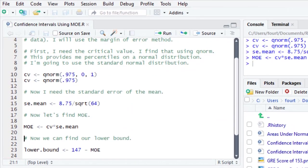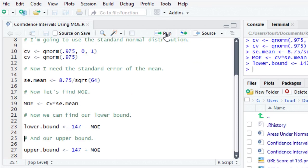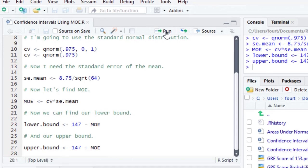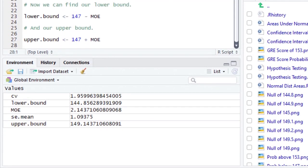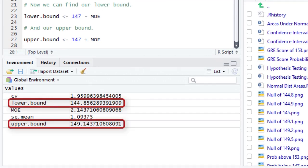Now we can find our lower bound. We take the sample mean of 147 and subtract MOE. And our upper bound, we take the sample mean of 147 and add MOE. The lower bound is 144.86. The upper bound is 149.14.